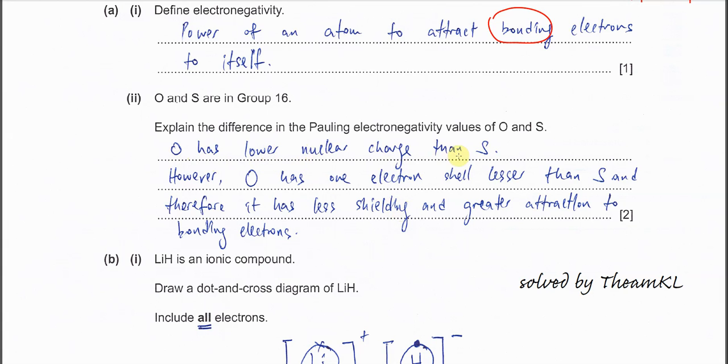Oxygen has a lower proton number than sulfur - this is true. However, oxygen has one electron shell less than sulfur, and therefore less shielding. The attraction of the nucleus toward bonding electrons is stronger. Less shielding means the nuclear charge can act on bonding electrons much better than sulfur. Less shielding effect equals greater attraction.